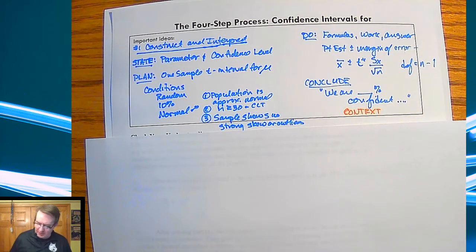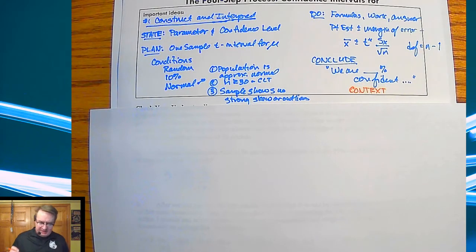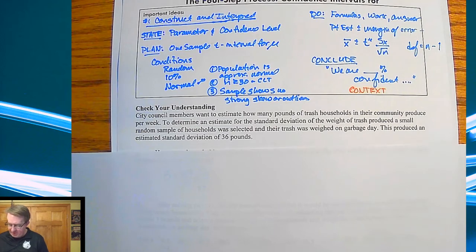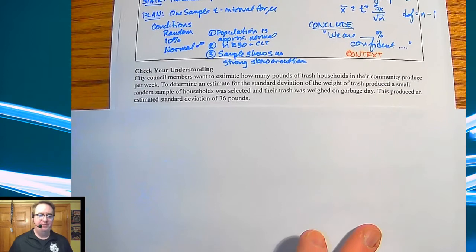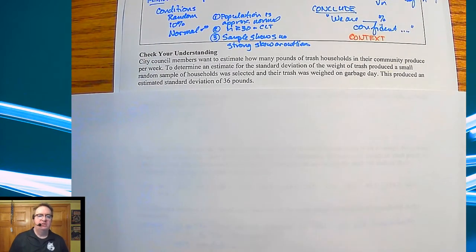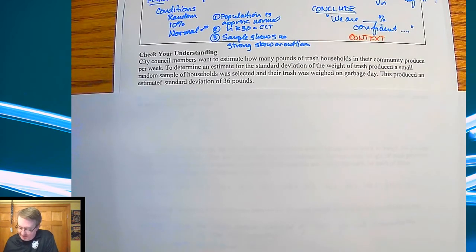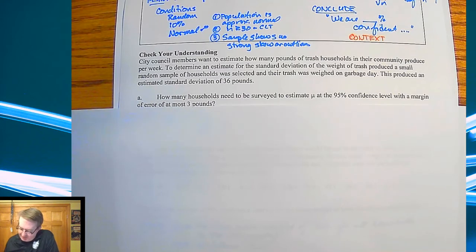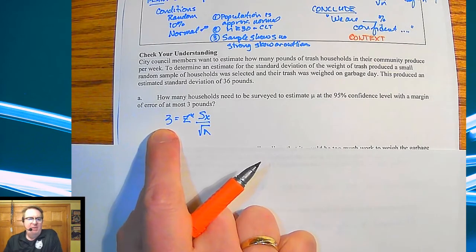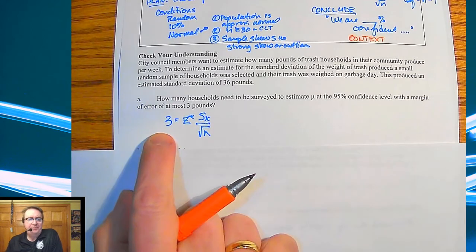So I want to walk you through this first one here. Feel free to hit pause, but I think this is the type of question that I often see. It's a good multiple choice type of question, so I want to make sure you guys are set for that. City council members want to estimate how many pounds of trash households in the community produce per week. To determine the estimate, an estimate for the standard deviation of the weight of trash produced in a small random sample of households are selected. The trash was weighed on garbage day. This produced an estimated standard deviation of 36 pounds.